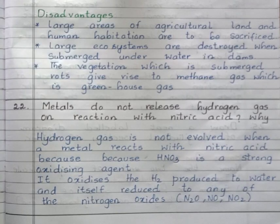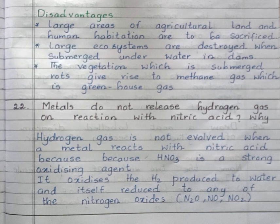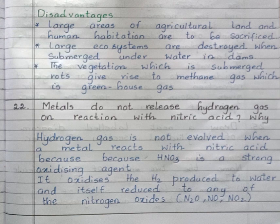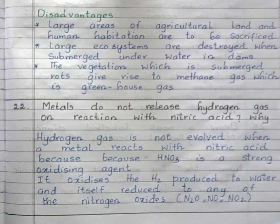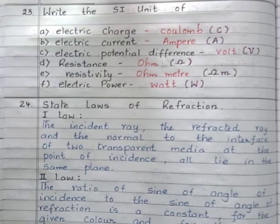Now moving to the next question: Metals do not release hydrogen gas on reaction with nitric acid. Why? Hydrogen gas is not evolved when a metal reacts with nitric acid because HNO3, that is nitric acid, is a strong oxidizing agent. It oxidizes the H2 produced to water and itself gets reduced to any one of the nitrogen oxides — N2O, NO, or NO2.